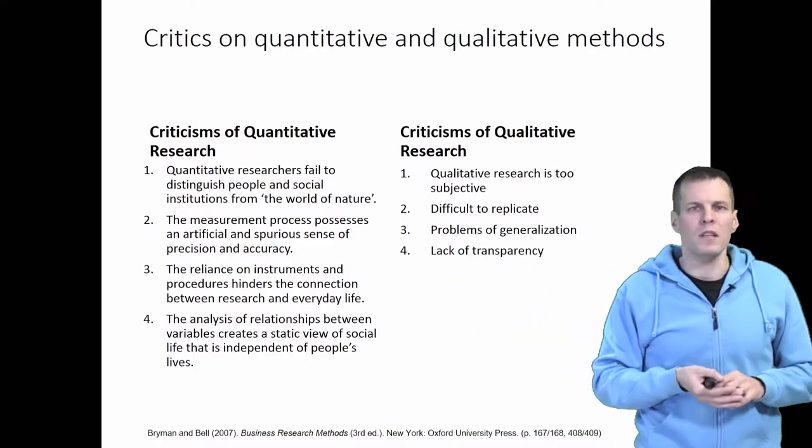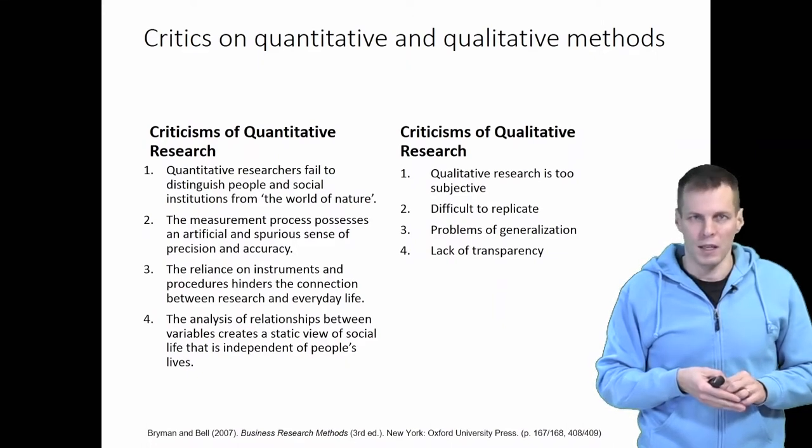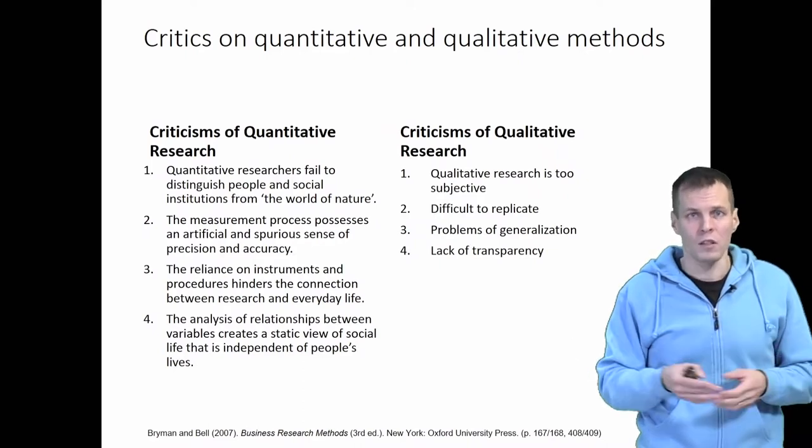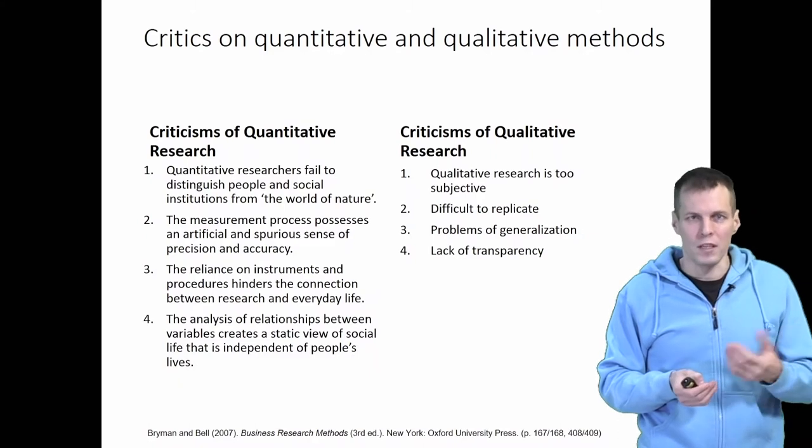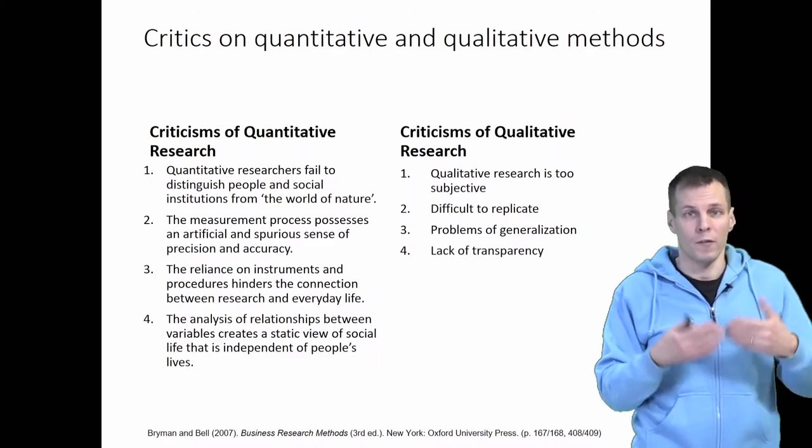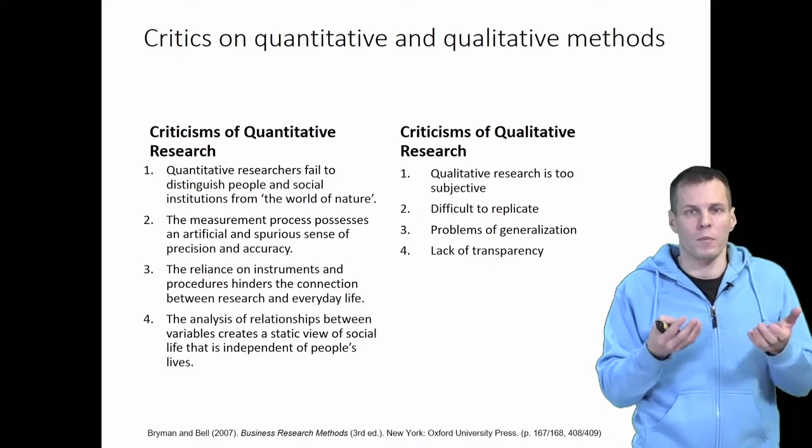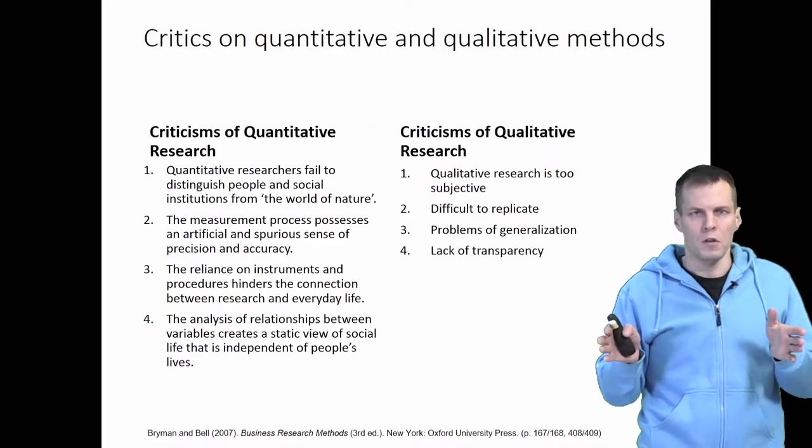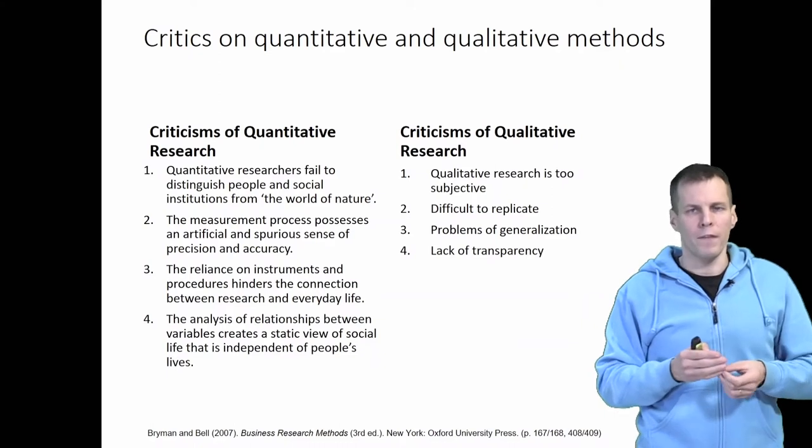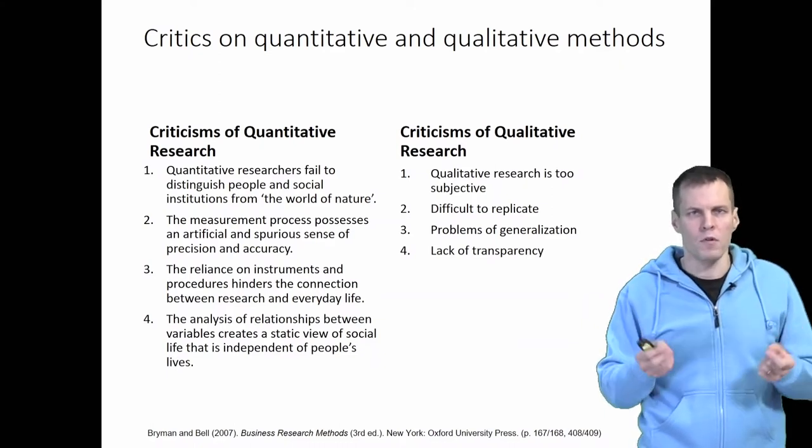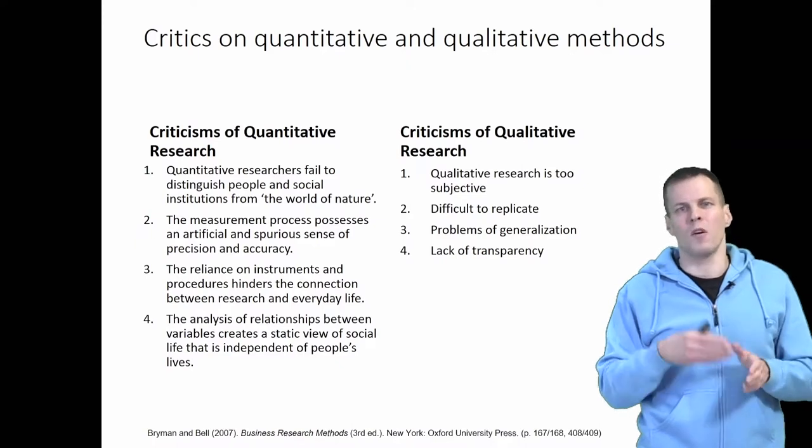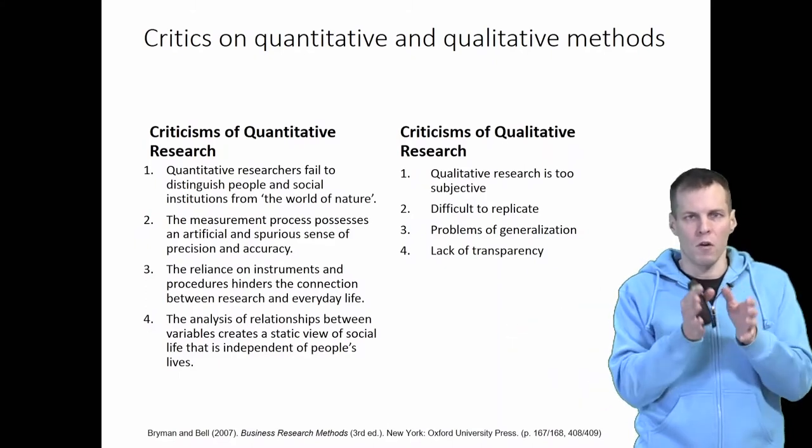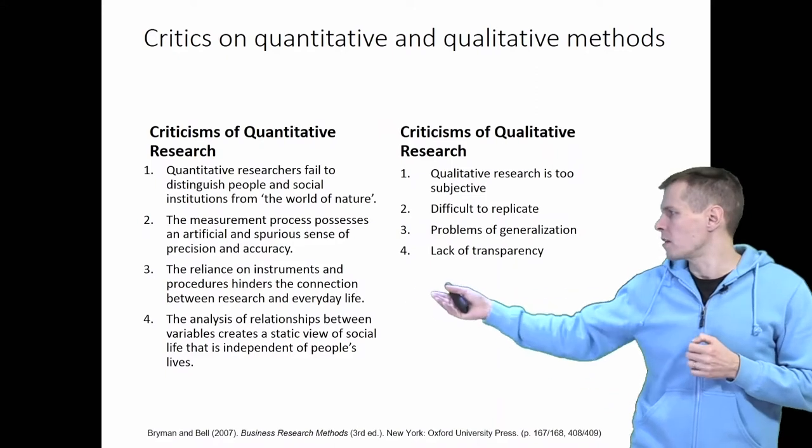The measurement instruments are sometimes not as great as people think. If we ask a person whether the company they work for is innovative, that might be affected by social desirability. It might not accurately reflect the actual level of innovativeness of a company. Finally, the relationship between two variables presents a static snapshot. We can only observe correlations or differences between means. They don't really tell us much about the causal process. We only observe the inputs and outputs, but the actual causal process remains a black box for a quantitative researcher.